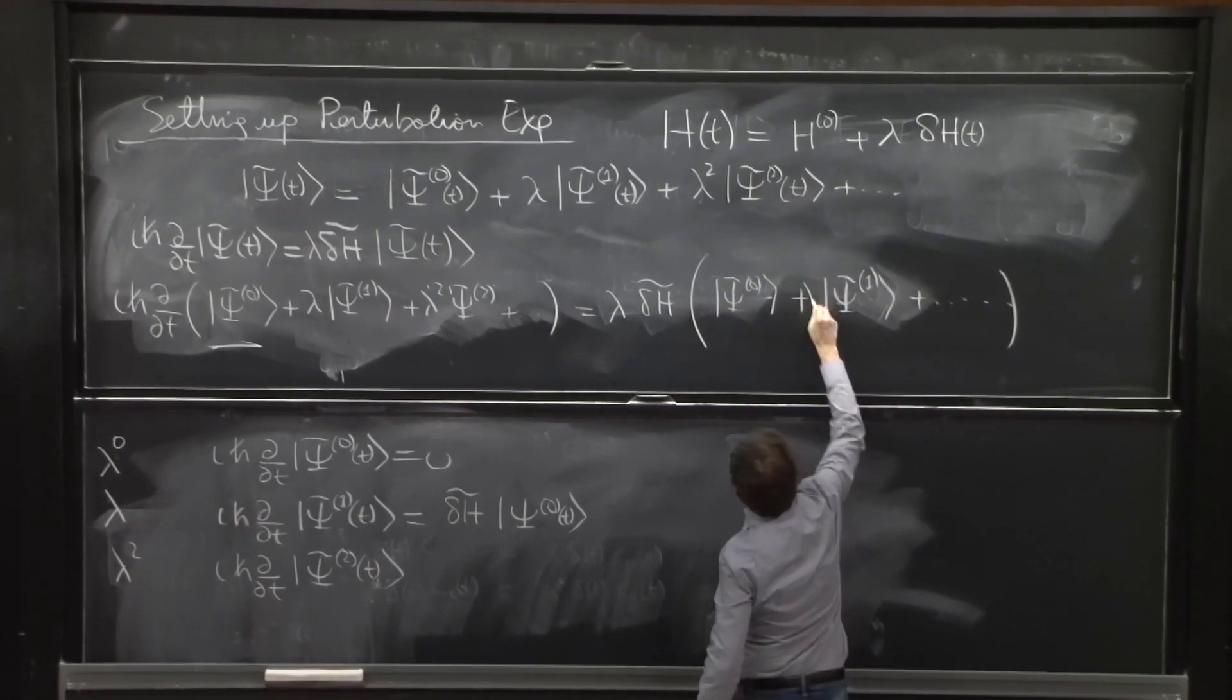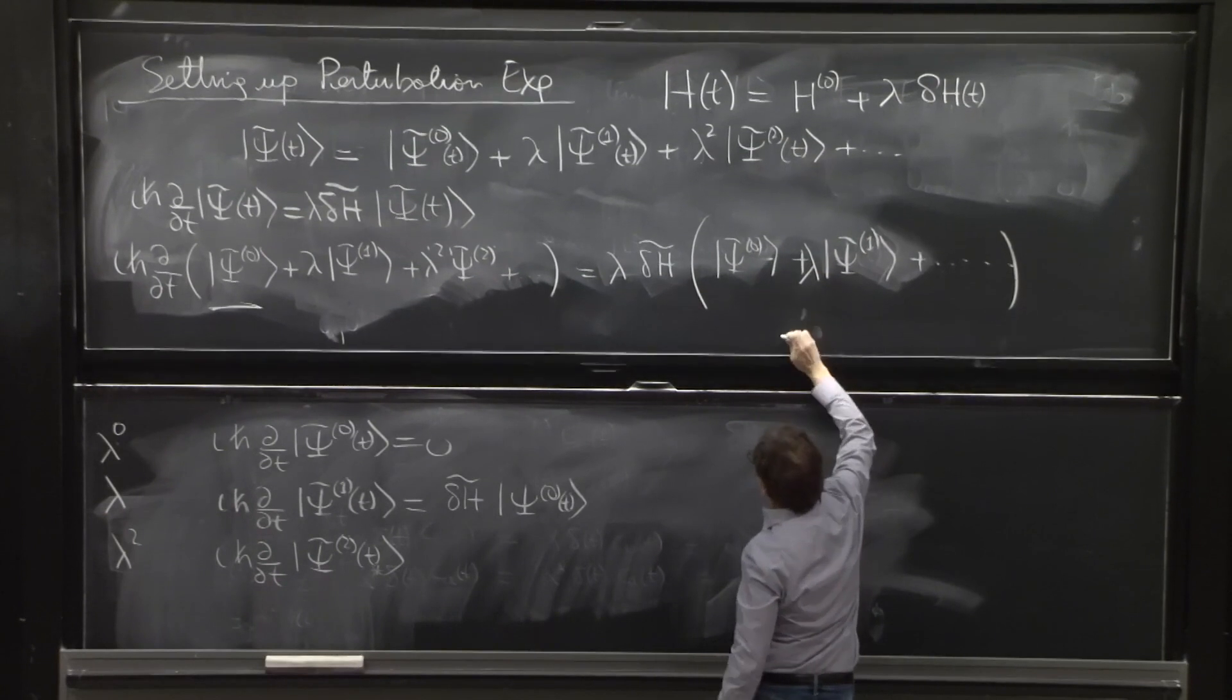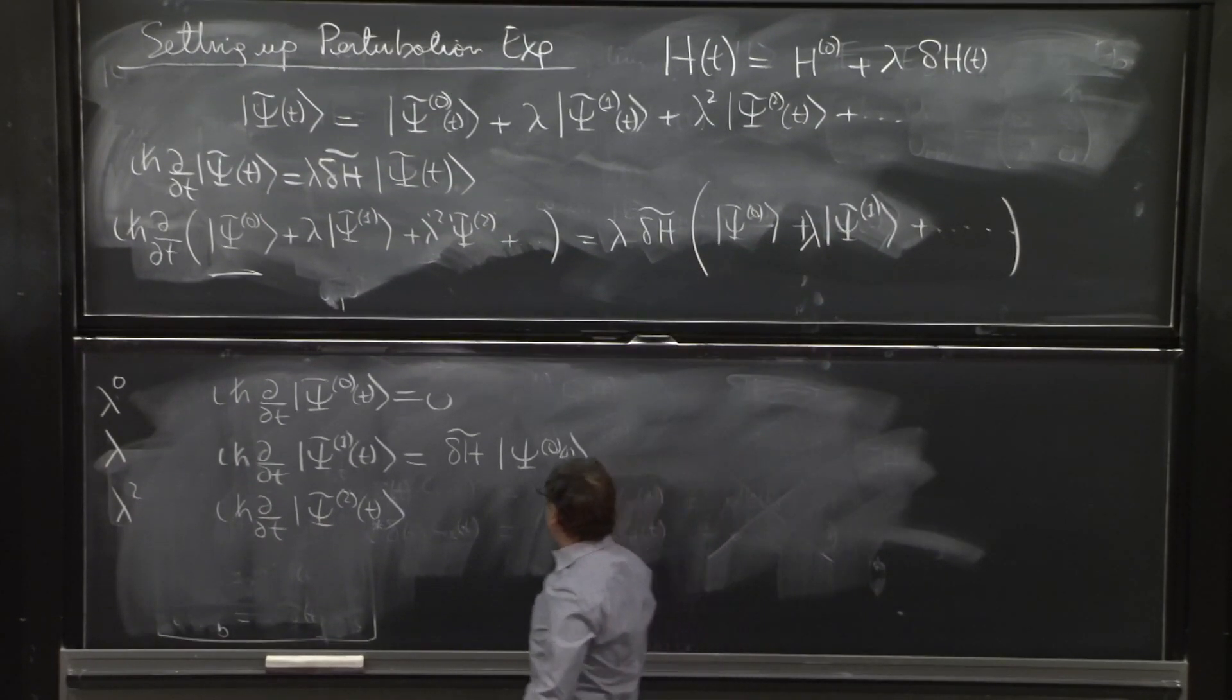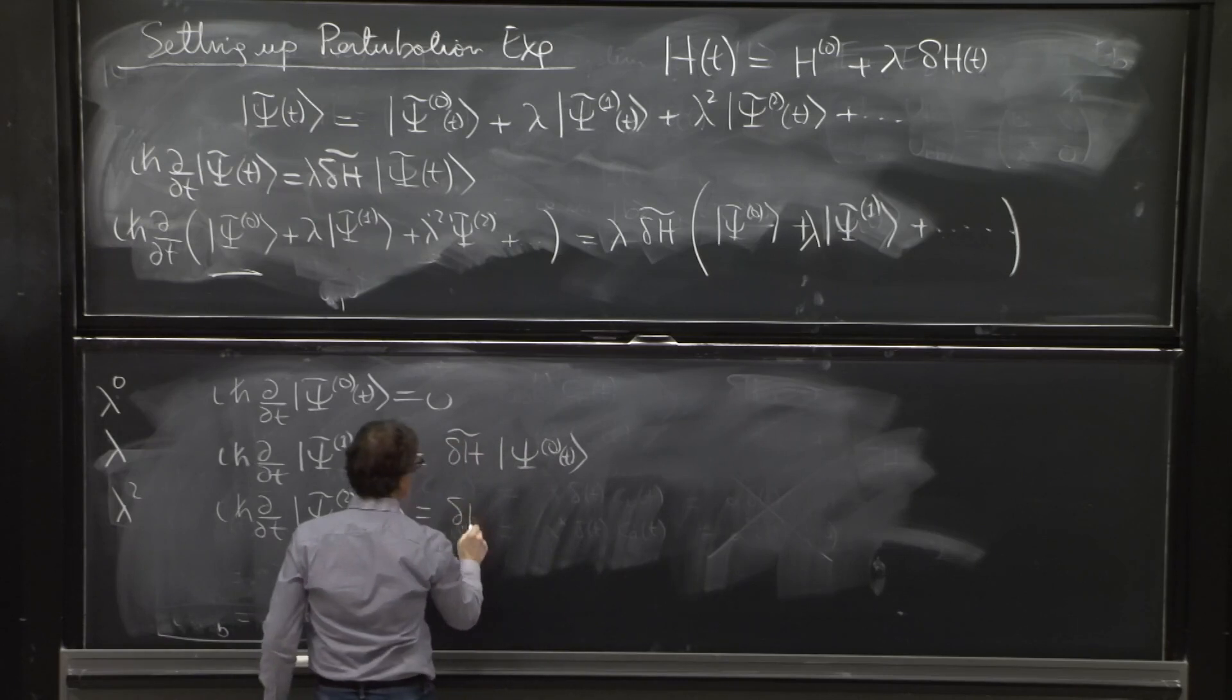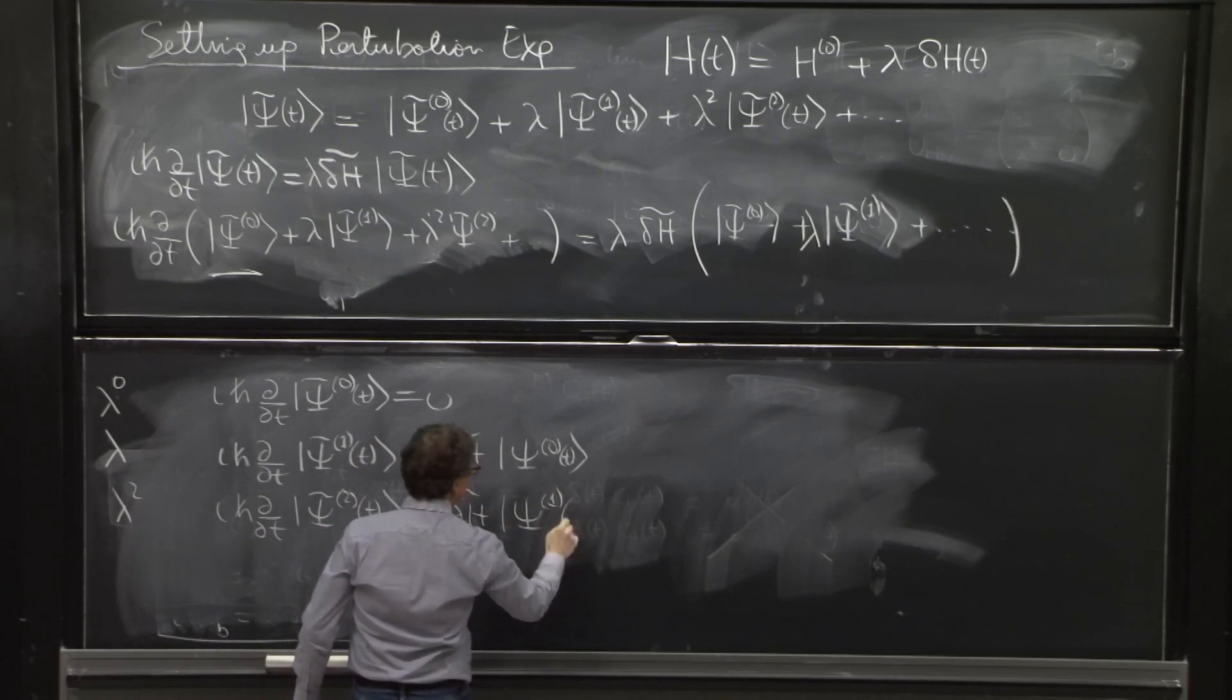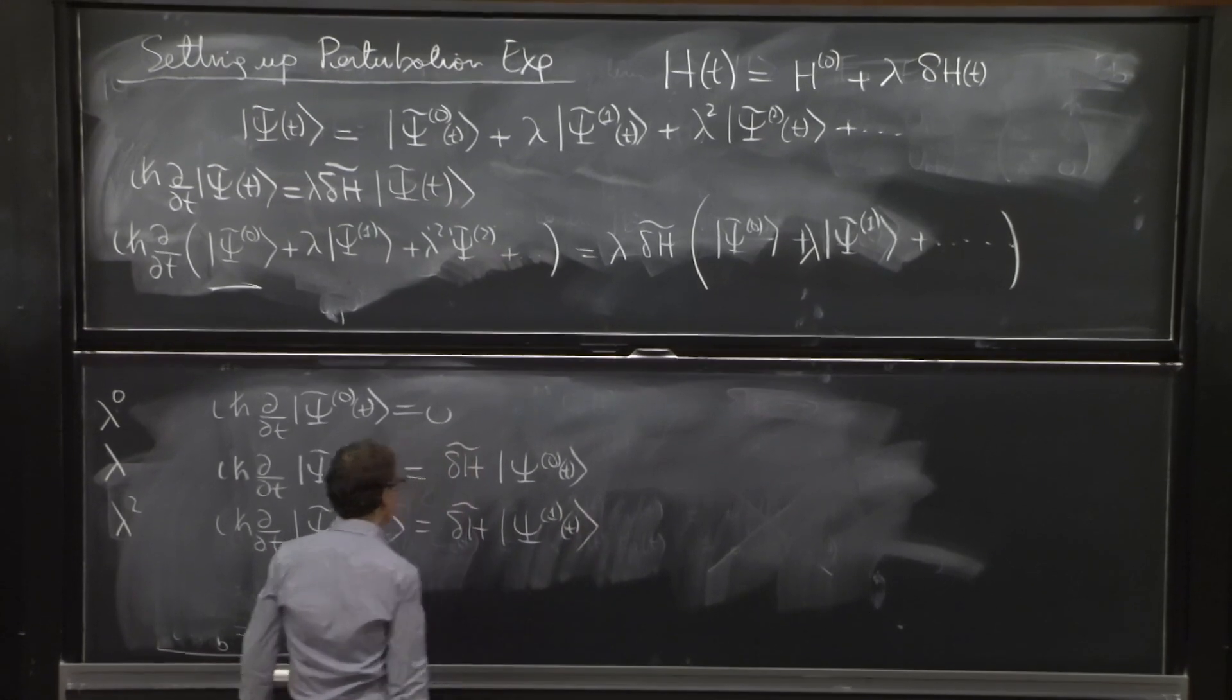And I forgot this lambda. And therefore, this time you get delta h psi 1 of t.